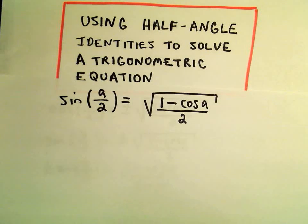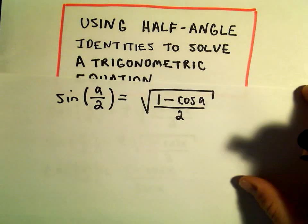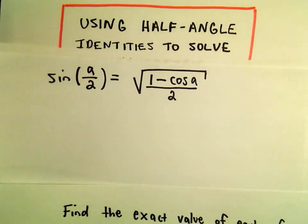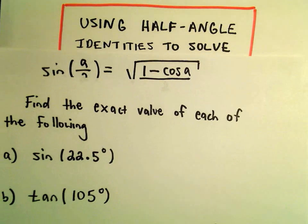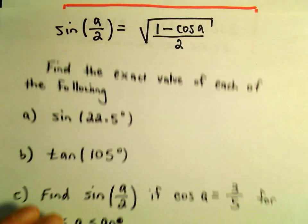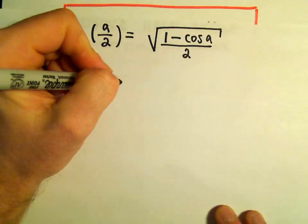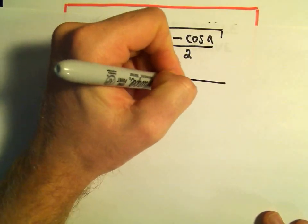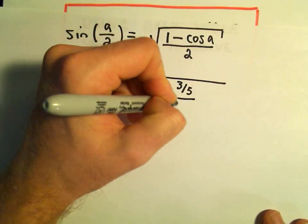Now I'm going to make use of the fact that we were given the value of cosine of a. Cosine of a was given to us as just the value 3 fifths. So now all I have to do is just plug that in. So we'll get the square root of 1 minus 3 fifths over 2.